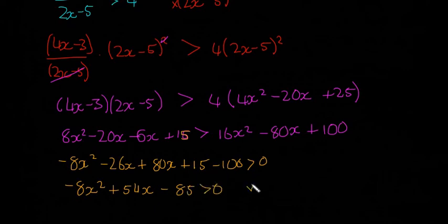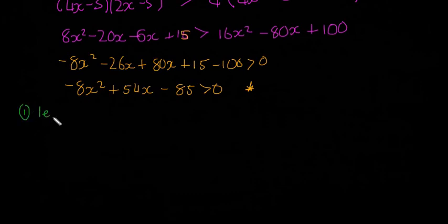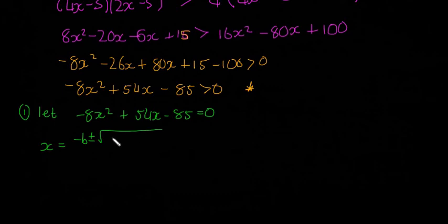And now this bit here is just like the old questions we were doing. So we're going to follow the same method, the same four steps to try and solve this. So step one is we're going to let minus 8x squared plus 54x minus 85 equal to 0. So this one's going to be too awkward to try and factorize, we're going to use the quadratic formula. So the quadratic formula is x equals minus b plus or minus the square root of b squared minus 4ac, all divided by 2a.